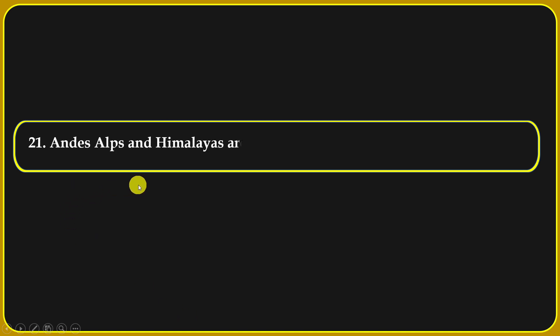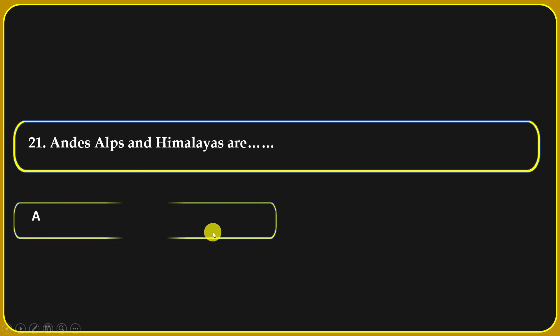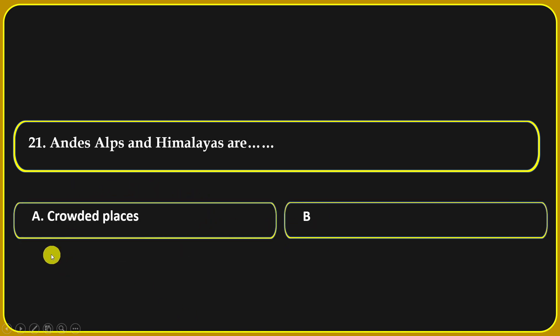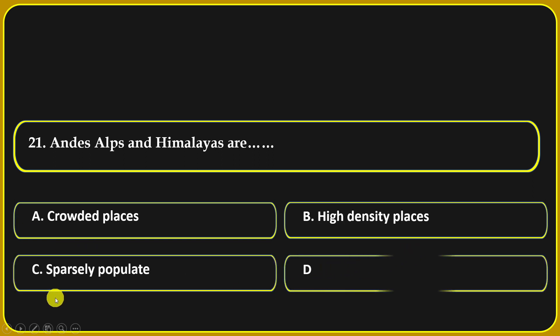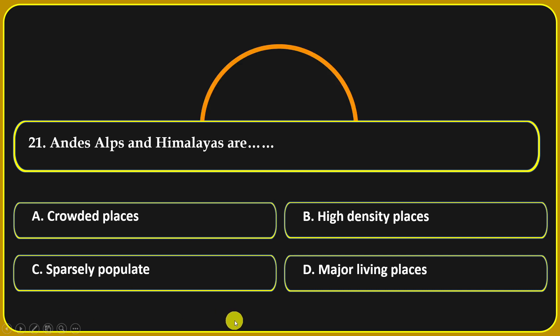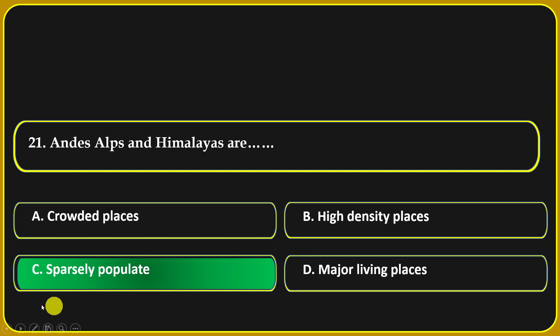Andes, Alps, and Himalayas are: crowded places, high density places, sparsely populated, or major living places. Sparsely populated is the correct answer.